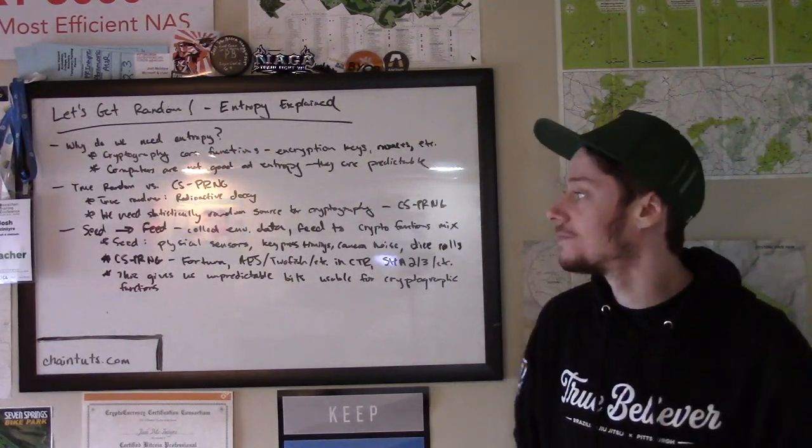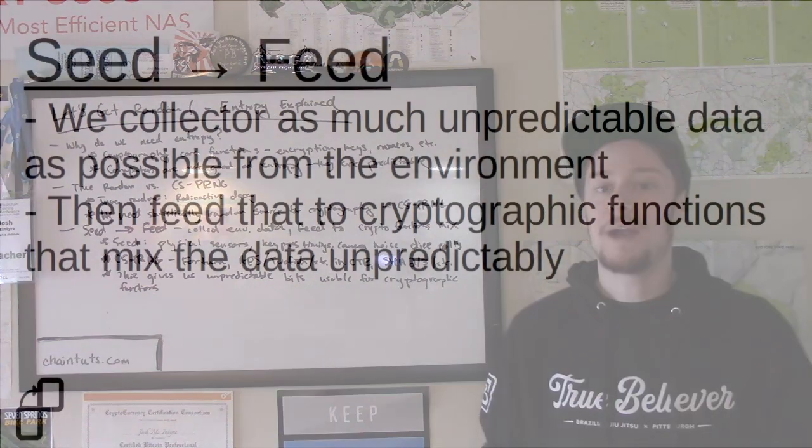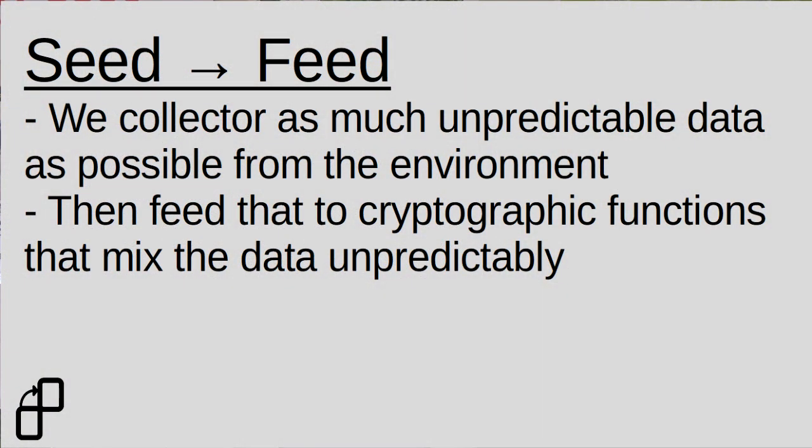So we use a mechanism with these functions that I kind of like to think of as seed and feed. We're going to collect a bunch of environmental data as random as we can possibly get it in a practical sense, and feed that to cryptographic functions that will mix this data and give us this statistically unpredictable distribution of random numbers.